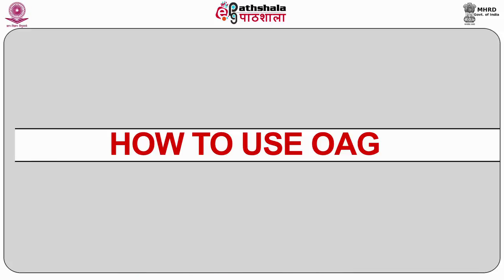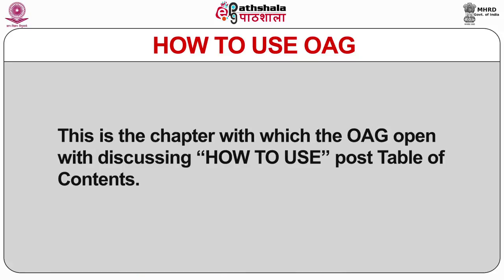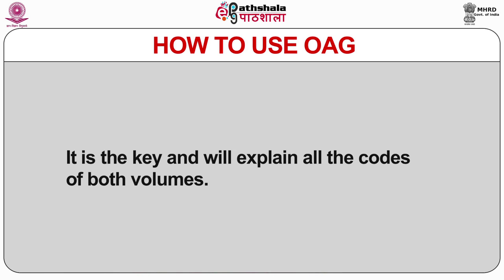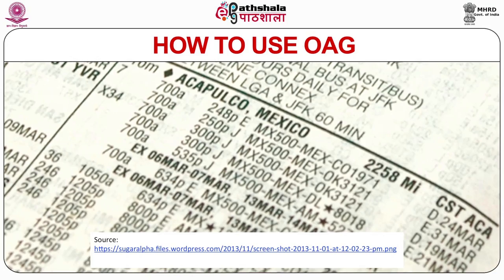Let us now discuss how to use the Official Airline Guide. The guide opens with a chapter on 'How to Use,' post the table of contents. This section has all the details about flight information for both parts of the guide — it is the key and explains all the codes of both volumes.